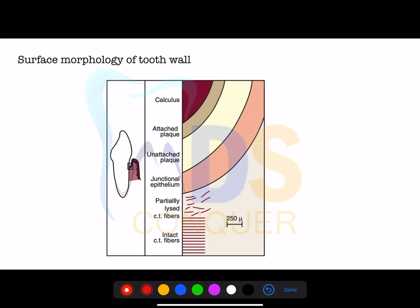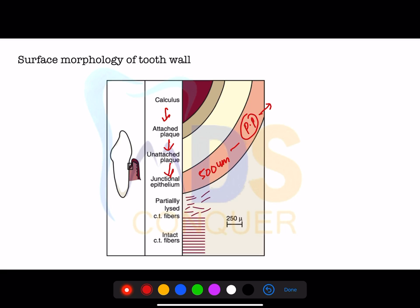An important sequence to remember for the periodontal pocket zones: first, calculus; followed by attached plaque; then a zone of unattached plaque; then a zone of junctional epithelium — which in a normal sulcus is about 500 µm, but in a periodontal pocket is destroyed and reduced to 100 µm; then partially lysed (semi-destroyed) connective tissue; and finally intact connective tissue.